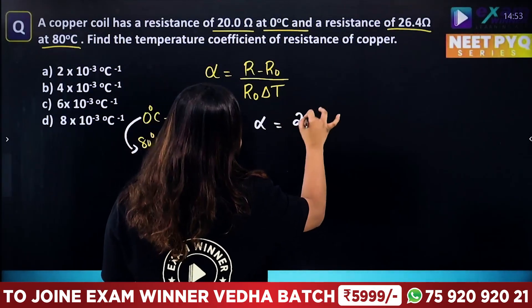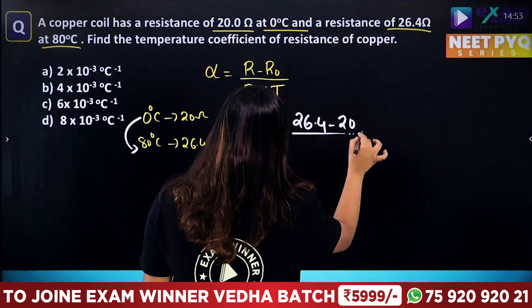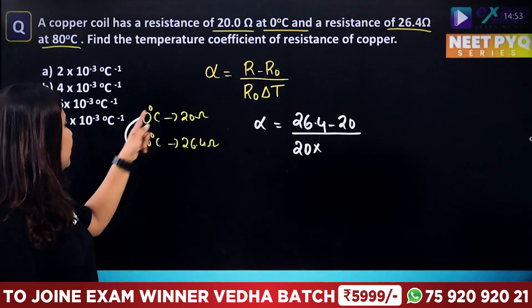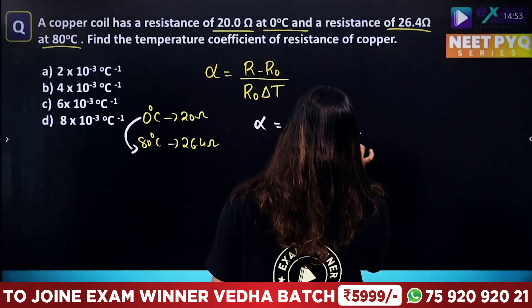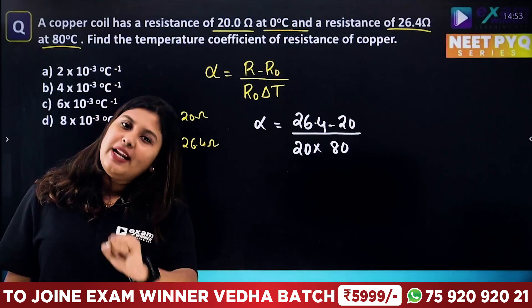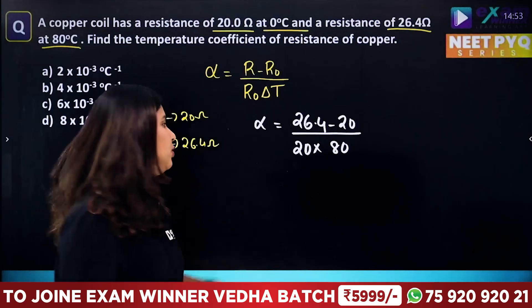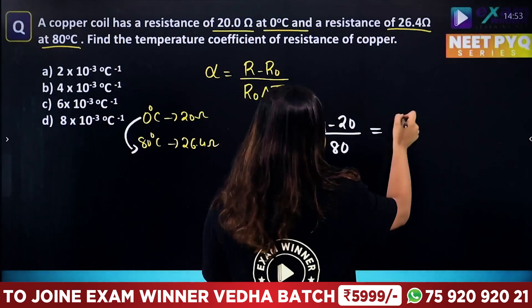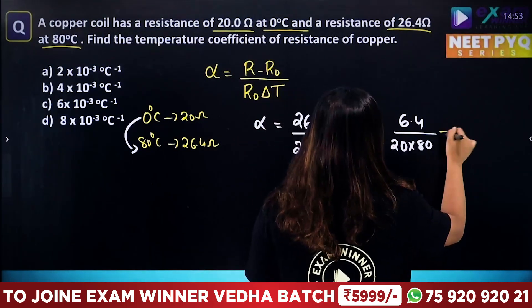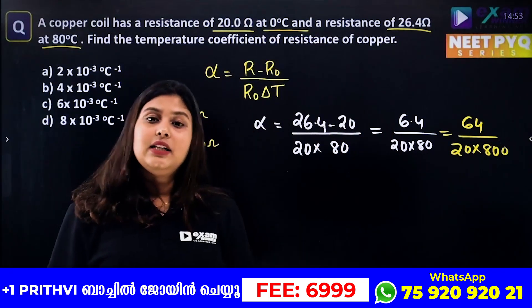So at 80 degree Celsius, R is 26.4. Minus R₀ at 0 degree Celsius, which is 20. Divided by R₀, which is 20. And delta T is 80. Now let's calculate: 26.4 minus 20 is 6.4. So we have 6.4 divided by 20 into 80, which is 1600. Now, 6.4 divided by 1600.